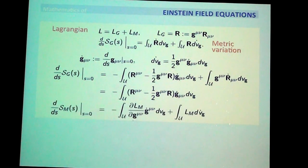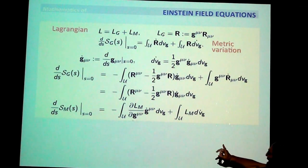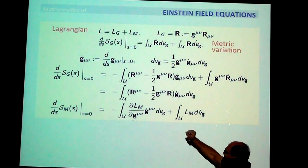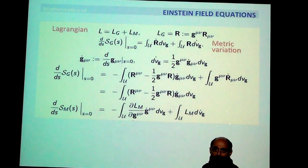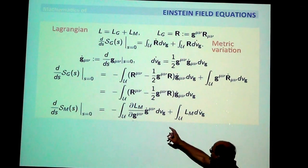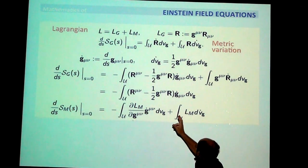You also have to take the derivative with respect to the matter part. When you do that, you are not varying psi, you are only varying g. So this is a calculation where you look at the Lagrangian but you take the derivative with respect to the metric — something unusual but very relevant.